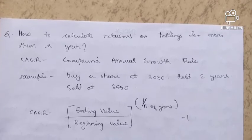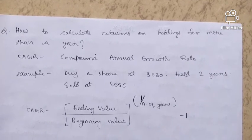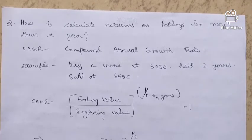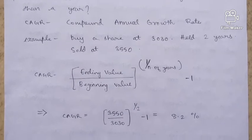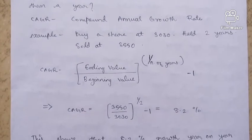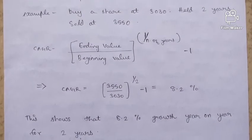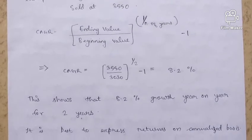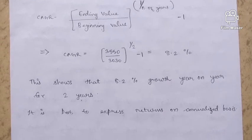For holdings of more than a year, we calculate the Compound Annual Growth Rate, or CAGR. For example, if you buy a share at 3,030 rupees, hold it for two years, and sell at 3,550 rupees, the CAGR formula is: (final value / beginning value) raised to the power of 1/n − 1, where n is the number of years. In this case, CAGR is 8.2% year on year. It is always best to express returns on an annualized basis.